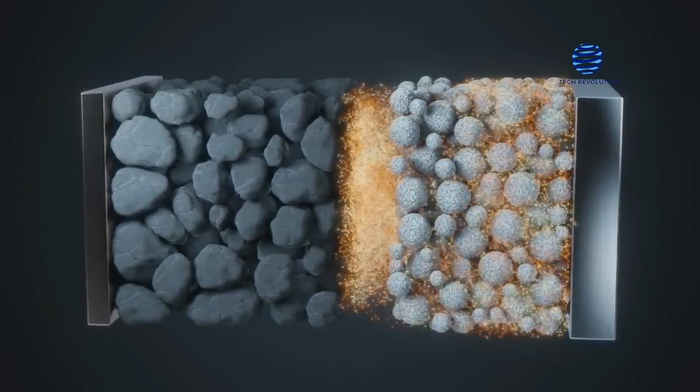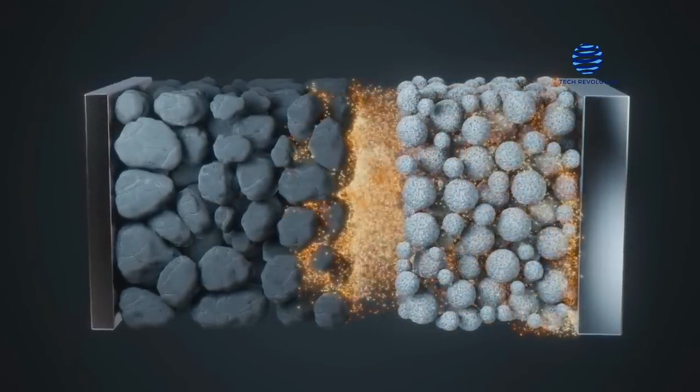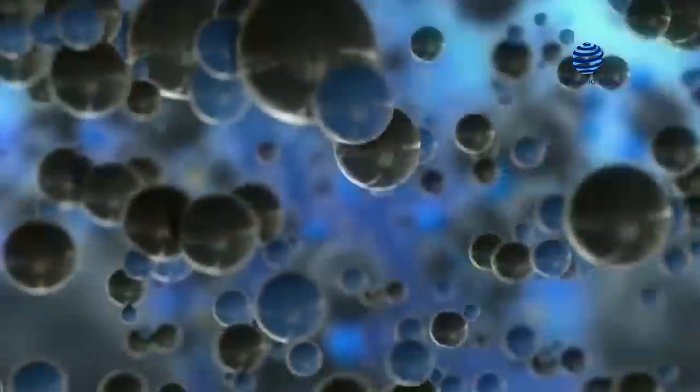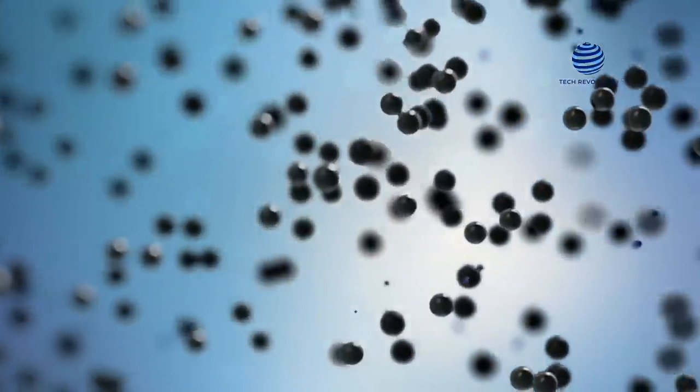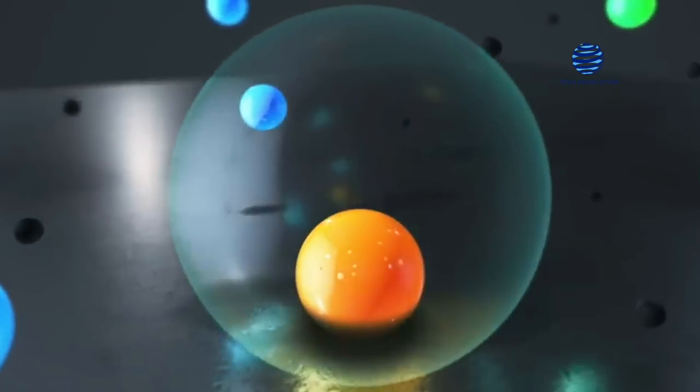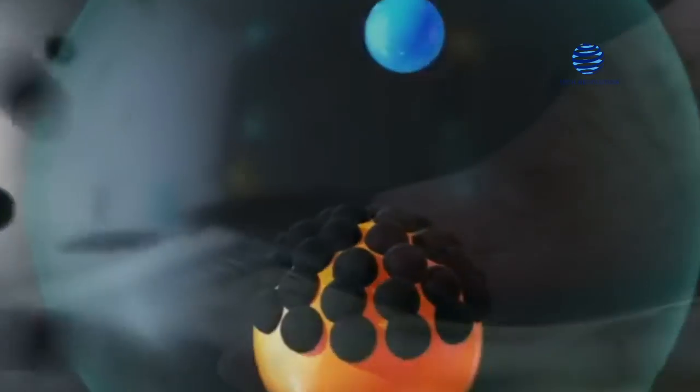But what if we suggest that there is a substance that is much stronger and has the power to displace graphene from the spotlight? This substance is referred to as borophene. In this video, let's take a look at a new material called borophene that could potentially replace graphene.